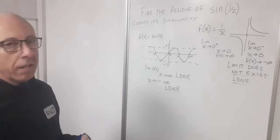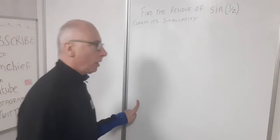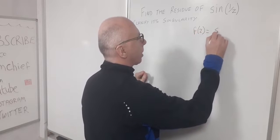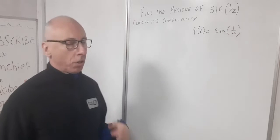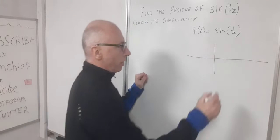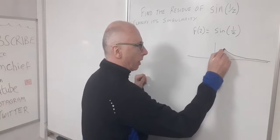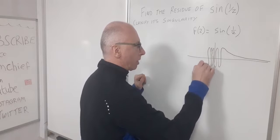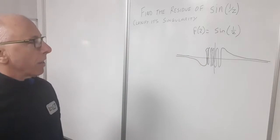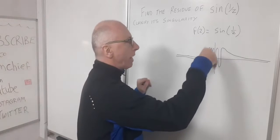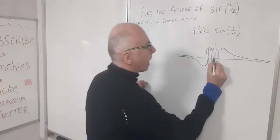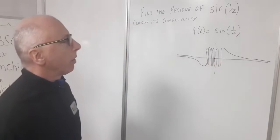Now let's look at sin(1/z). This function behaves in quite a crazy manner — it comes from the infinity side, oscillates up and down an extreme number of times, then goes off to negative infinity on the other side. Near zero, we are concerned about what happens, as the function just oscillates up and down as we discussed about the sine function combined with 1/z.